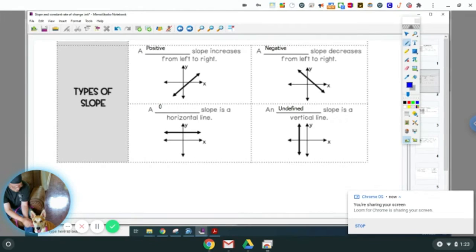So there are four different types of slopes. There's a positive slope, a negative slope, a slope of zero, and an undefined slope.